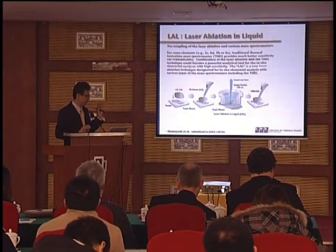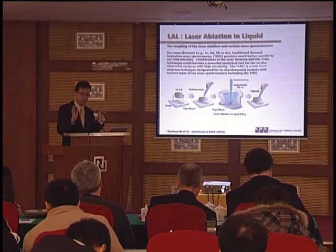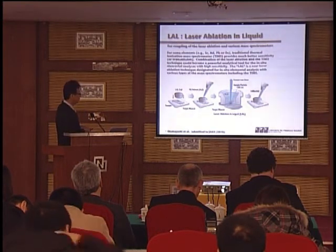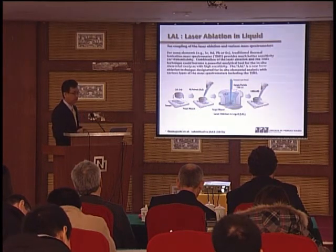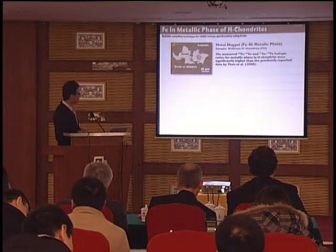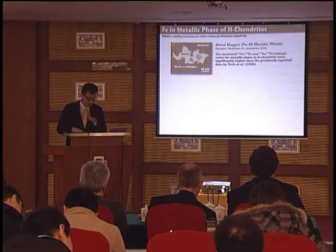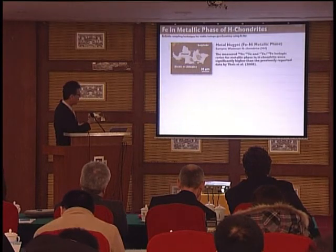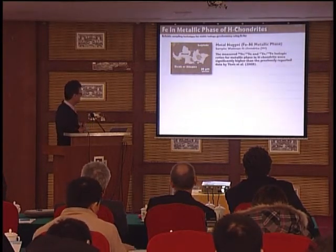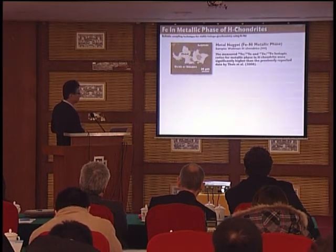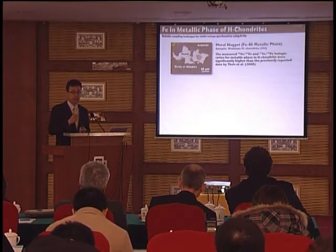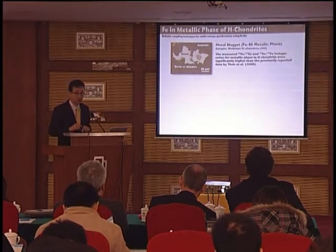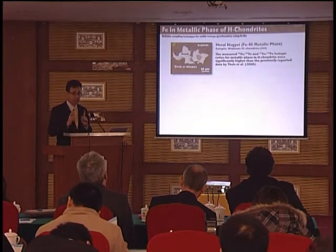This is the beauty of the laser technique — in the case of laser ablation, we can separate isobaric interferences if needed. This is one of the examples we've recently achieved: isotope measurements from a meteorite. Most people are not interested in meteorites, but we are trying to understand how the solar system formed 4.6 billion years ago. This is about metallic inclusions, but the problem is the formation sequence of metallic inclusions — nobody knows. This is very important because it relates to the growth of the Earth's core.